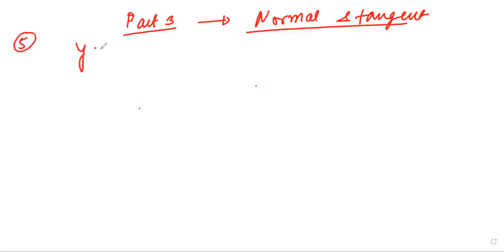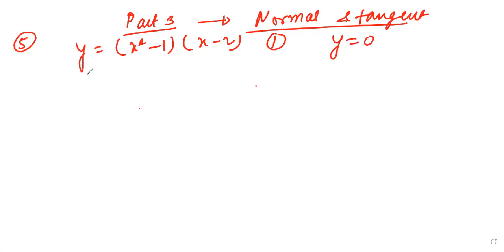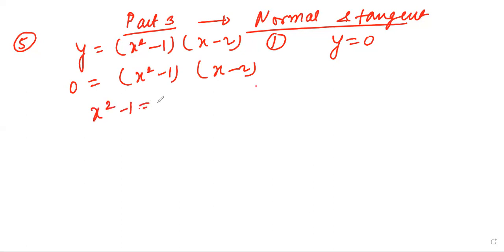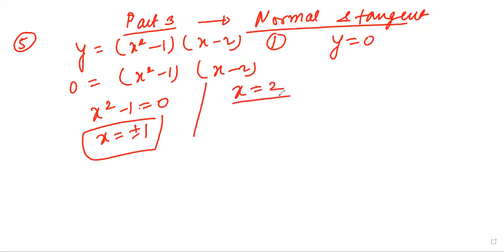The fifth equation is given: y equal to (x squared minus 1)(x minus 2). This is equation 1. So put y equal to 0 and find the value of x. So 0 equal to (x squared minus 1)(x minus 2). From x squared minus 1 equal to 0, x is equal to plus minus 1. In the similar manner, x is equal to 2. We are getting 3 points: 2 comma 0, 1 comma 0, and minus 1 comma 0.